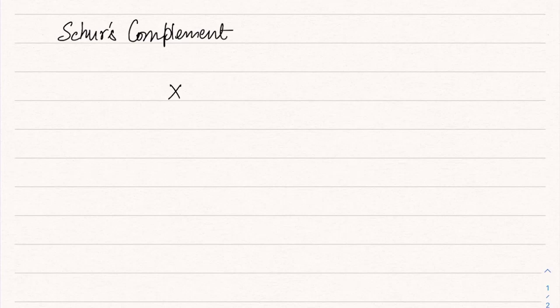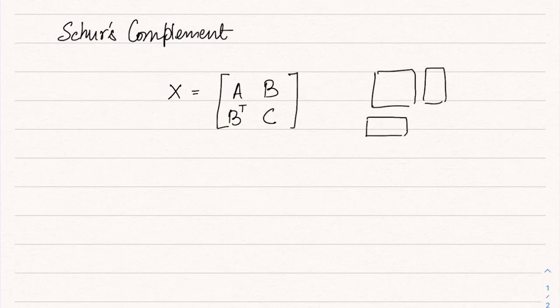So let us say that there is a matrix X which has the form of a block matrix: A, B, B transpose C. So you can think of it as something like this, where B and B transpose would be rectangular and A and C are square matrices.